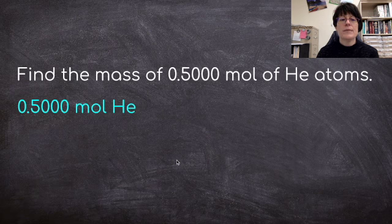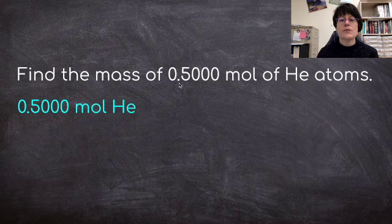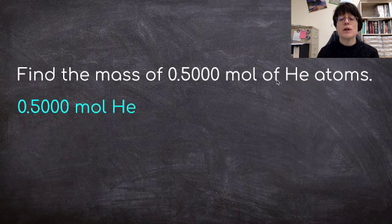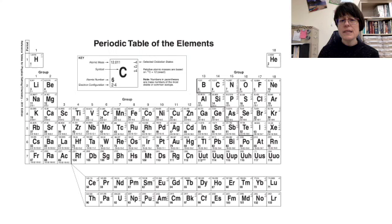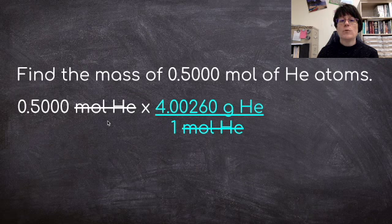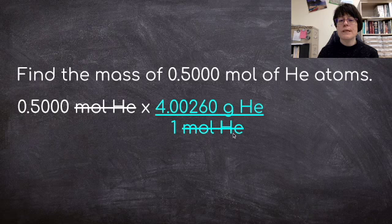So we can do a problem like this now. Find the mass of 0.5000 moles of helium atoms. So we write 0.5000 moles of helium because that's what's given in the problem. And now we have to convert to mass in grams. And so I know that if I go to my periodic table, I will be able to figure out the molar mass of helium. 4.00260 grams. So I will put that into my problem, making sure I put moles on the bottom. So 1 mole of helium is equal to 4.00260 grams of helium. I've crossed out my moles. I'm in grams. So I'm where I want to be conversion wise.